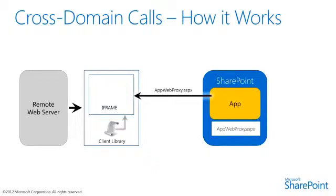You can use both REST and the JavaScript client-side object model, the CSOM, to interact with the SharePoint lists and libraries. If you use REST, you will use the request executor object to access the supported verbs. If you use the JavaScript client-side object model, you will use the client context object to access SharePoint objects. These calls cross the iframe, and the actual call is made by appwebproxy.aspx.